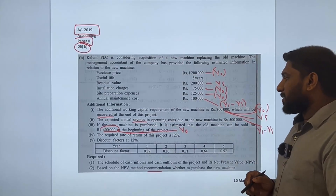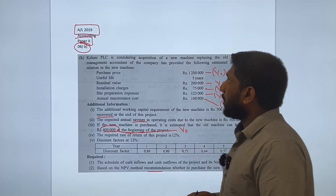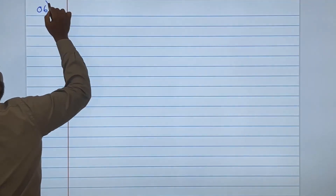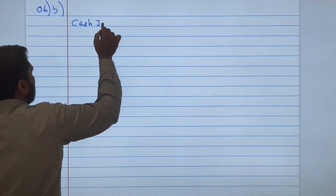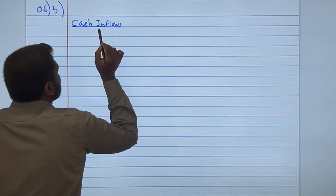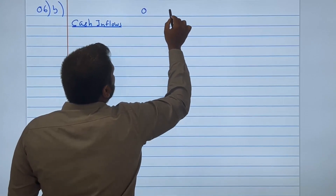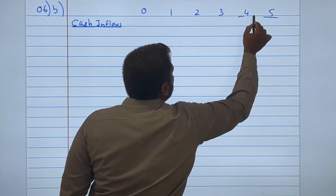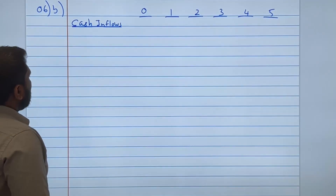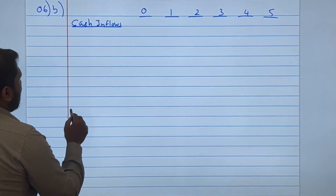Now we have a good understanding of the question. Let's set up our workings for question 6 part B. I'll list cash inflows and cash outflows separately across years 0 to 5. I'll leave about 7 lines for the cash inflows section, then write the cash outflows below.